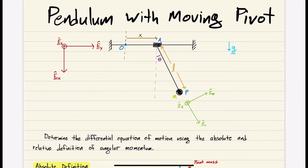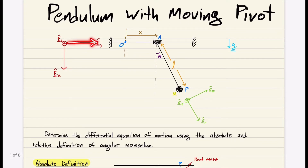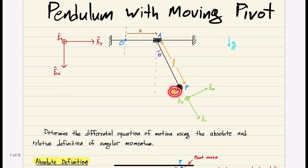We have our ground inertial frame EX, EY, EZ. EY is pointing straight to the right, EX is pointing straight down, and EZ is EX crossed with EY, coming out of the page. We have our pendulum with a point mass P of mass M, and a green frame fixed to the pendulum. ER points from the hinge out to the point mass, EZ is also out of the page, and E-theta is EZ crossed with ER.